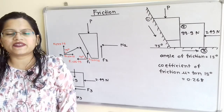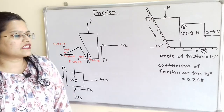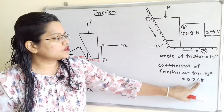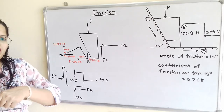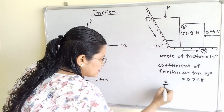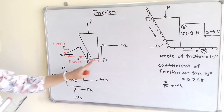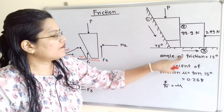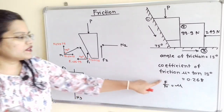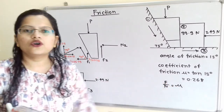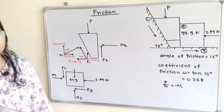The angle of limiting friction is given as 15 degrees. So we can find the coefficient of friction: μ = tan(15°) = 0.268. The relation between frictional force and normal reaction gives us F1 = μN1, F2 = μN2, and F3 = μN3 for all contact surfaces. Whenever we find N1, N2, or N3, we can easily find F1, F2, and F3.